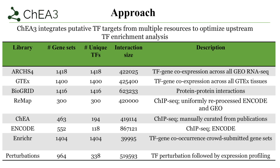CHIA-3 integrates transcription factor targets from multiple libraries to enhance transcription factor enrichment analysis. It uses eight libraries: R2-4, GTEx, Biogrid, Freemap, CHIA, ENCODE, Enrichr, and Perturbations.